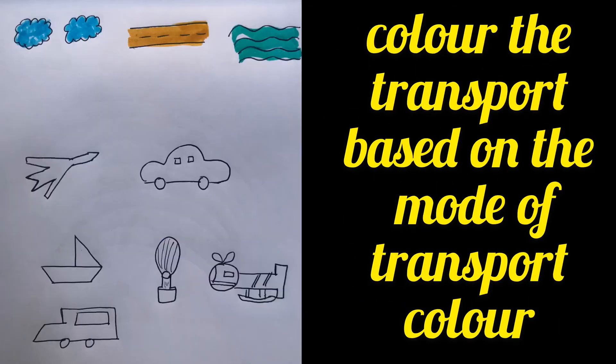And coming to this worksheet, on the top, the mode of the transport is colored in different colors and the vehicles are specified in the bottom. So what does the kid need to do? He needs to pick up a vehicle, find what is the mode of the transport in the top, look for the color and color the same color for the vehicles. For example, if it's an airplane, the clouds are in blue color. So he's going to color all the transports that go in the air with blue color.